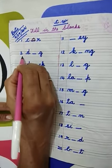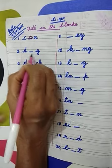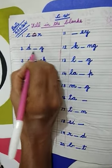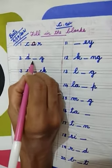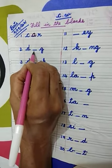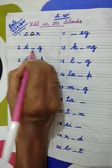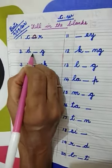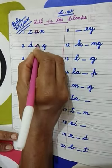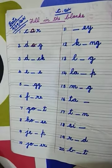Number 2: D-G. Which weight is this? Dog. Spelling of dog: D-O-G. Which letter is missing here? Letter O. We have to write here letter O and complete the weight dog.